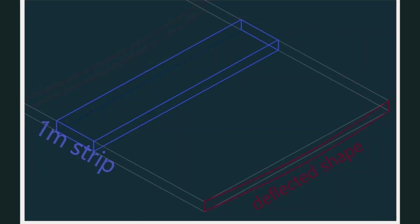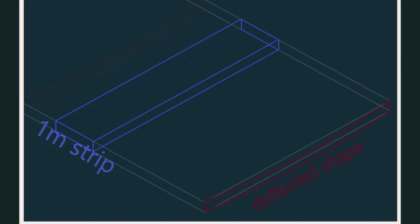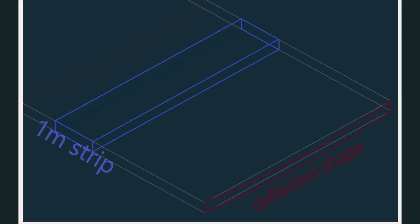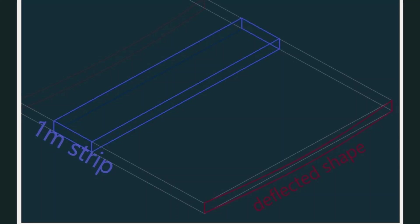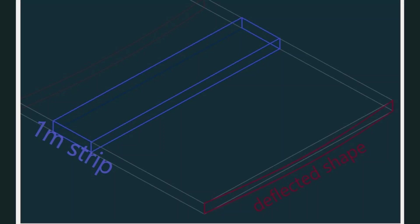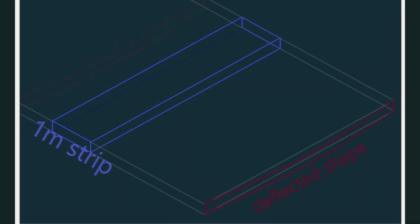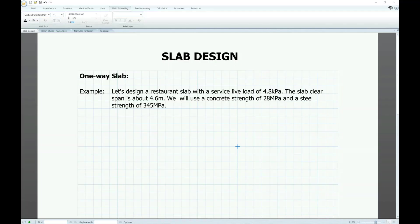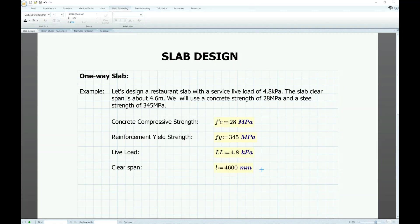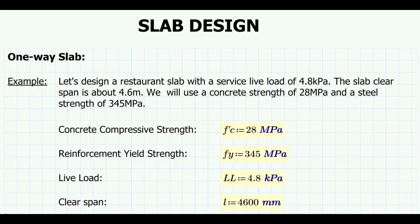For this video, I will show a basic example of how to design a one-way slab. When a one-way slab is loaded, the deflected shape of the slab looks like this. For analysis and design, we cut out a one-meter strip and analyze it like a beam, where one meter is the width and the total depth h is the thickness of the slab. We will design a restaurant slab with a service live load of 4.8 kPa, a clear span of 4.6 meters, concrete strength of 28 MPa, and steel strength of 345 MPa.